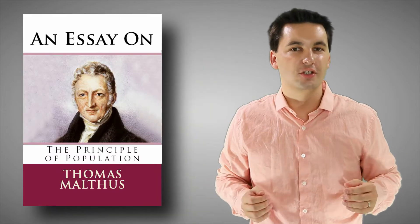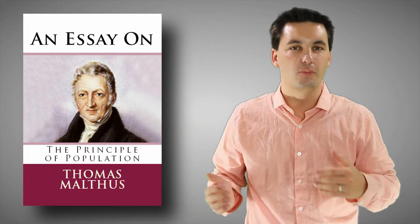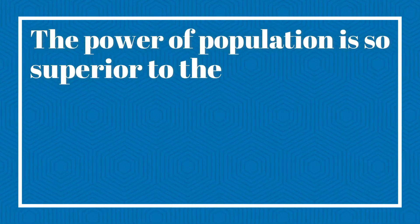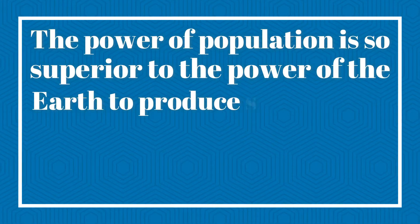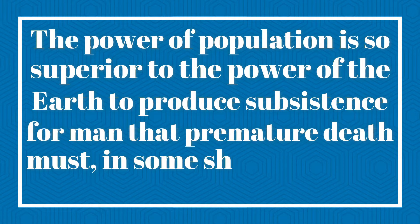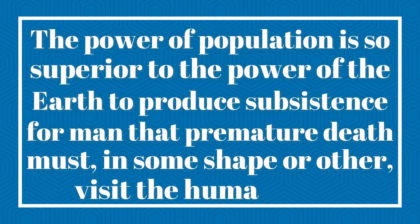Today we still study Thomas Malthus because he was one of the first people to really look at demographic data and to understand what was happening with population growth and our food supply. Malthus published his thoughts in an essay on the principles of population. In it he says that the power of population is so superior to the power of the earth to produce subsistence for man that premature death must in some shape or other visit the human race.